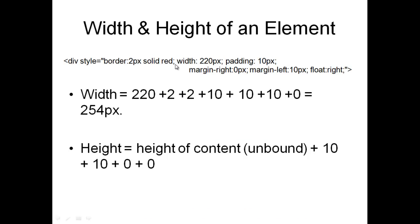Here we have a div with a 2-pixel red border, a width of 220, padding of 10, right margin of 0, and left margin of 10. To figure out how wide the whole thing is: 220 plus 2 for the left border plus 2 for the right border plus 10 left padding plus 10 right padding plus 10 left margin plus 0 for the right margin — so the whole thing is 254 pixels wide.